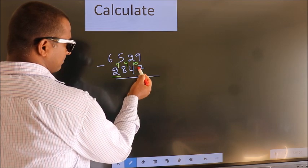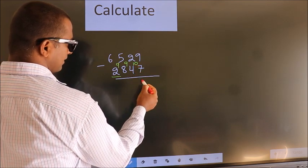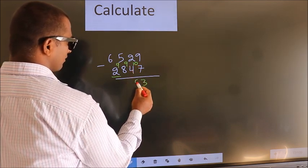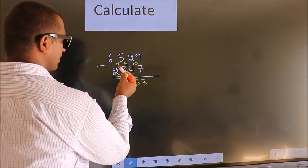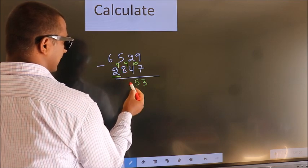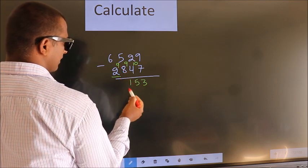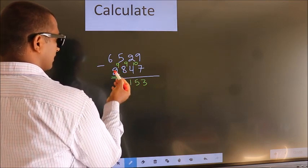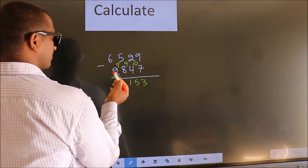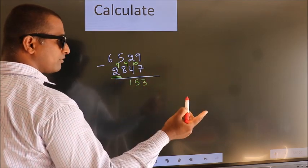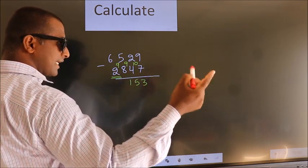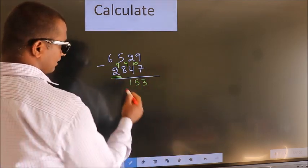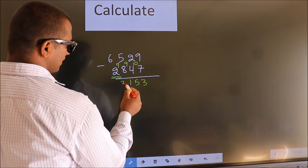10 minus 7 is 3. 9 minus 4 is 5. 9 minus 8 is 1. For the first digit, you do 6 minus 2, we get 4. Decrease more by 1, we get 3.